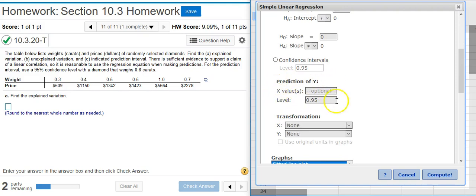And then, down here is an area for prediction of Y, which we'll use in a moment when we get to that part of the problem. But I have everything I need for my ANOVA table, so I come down here and hit Compute.